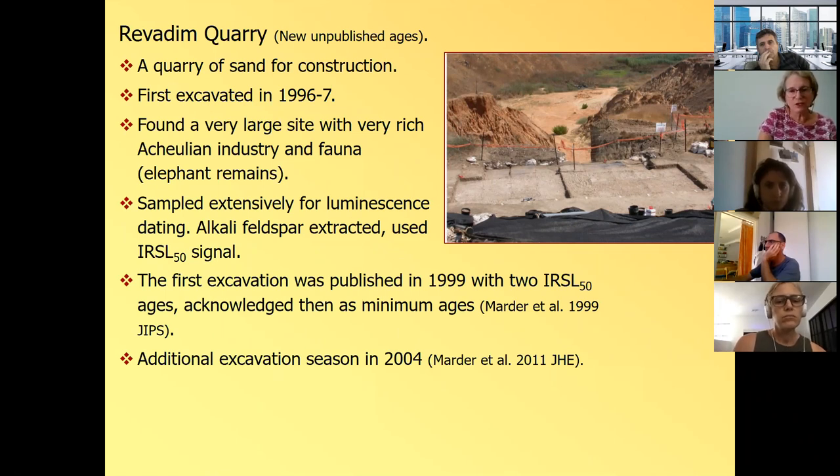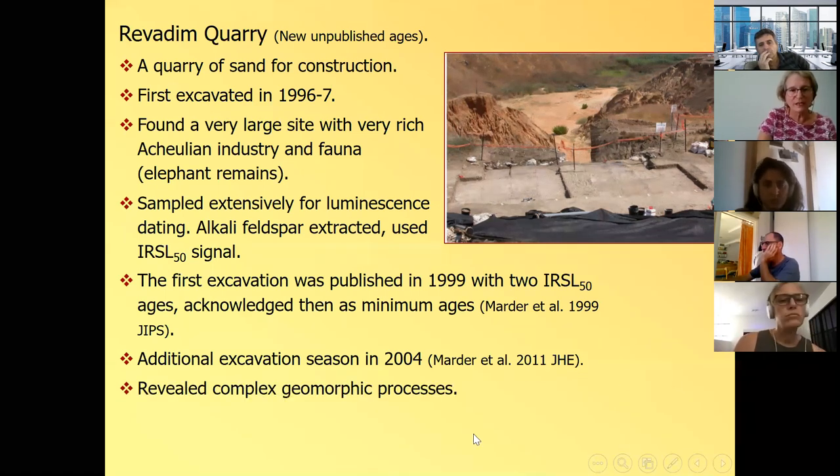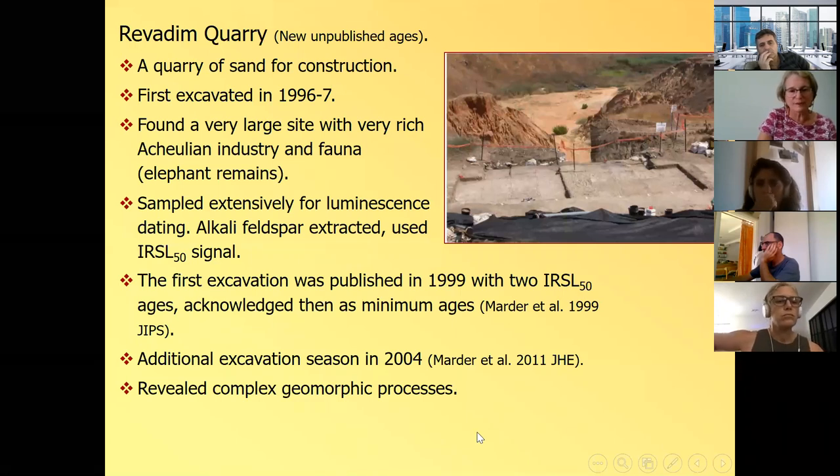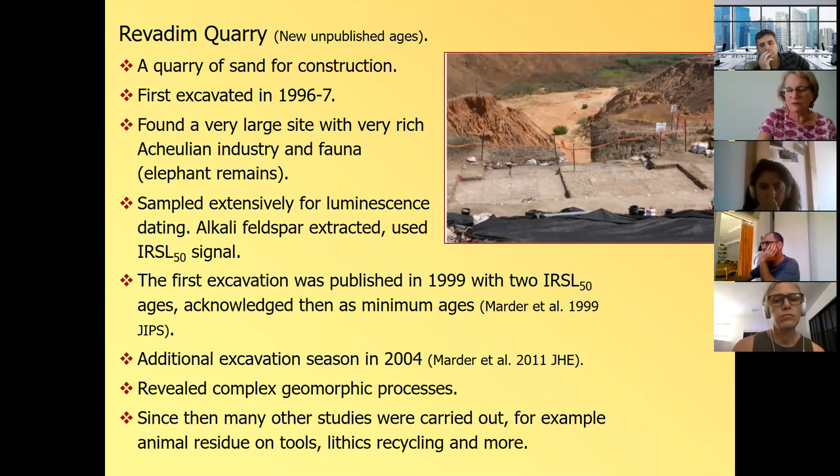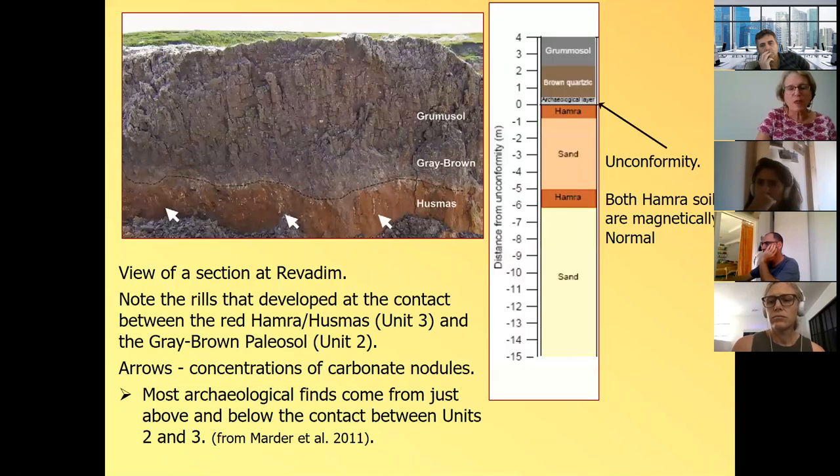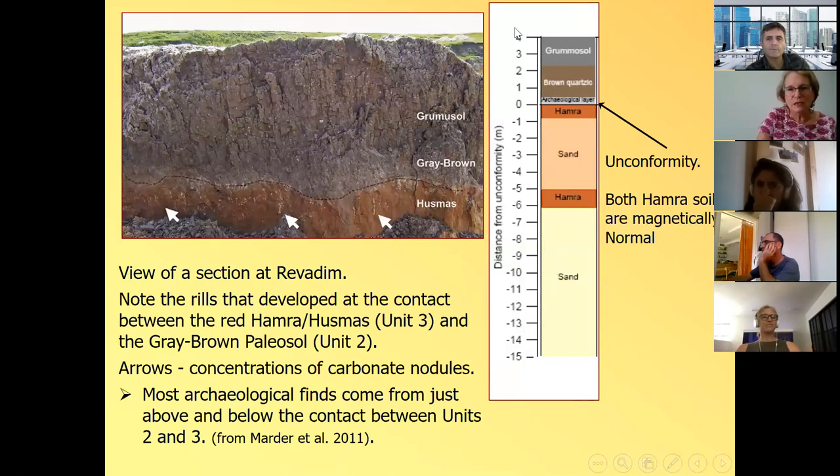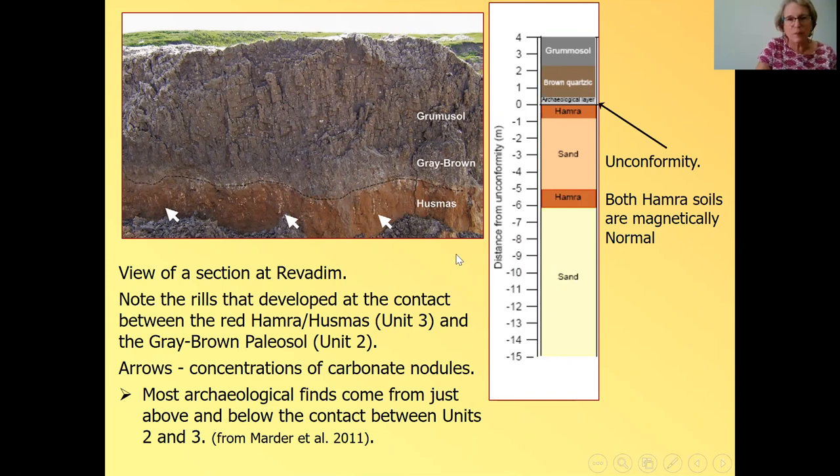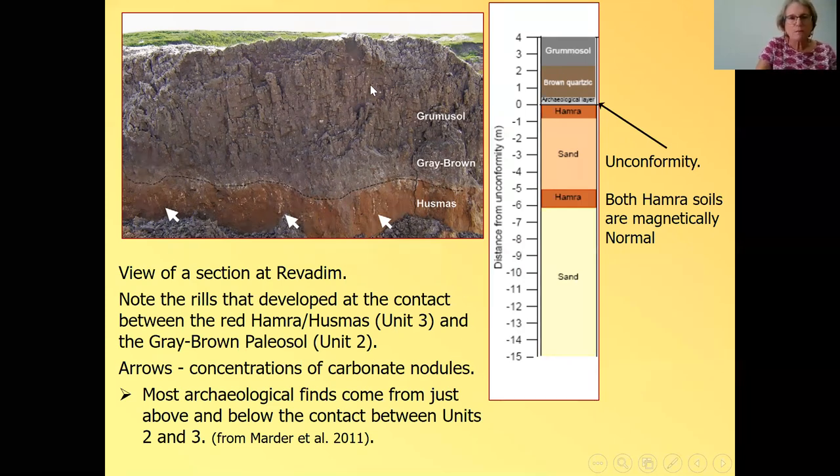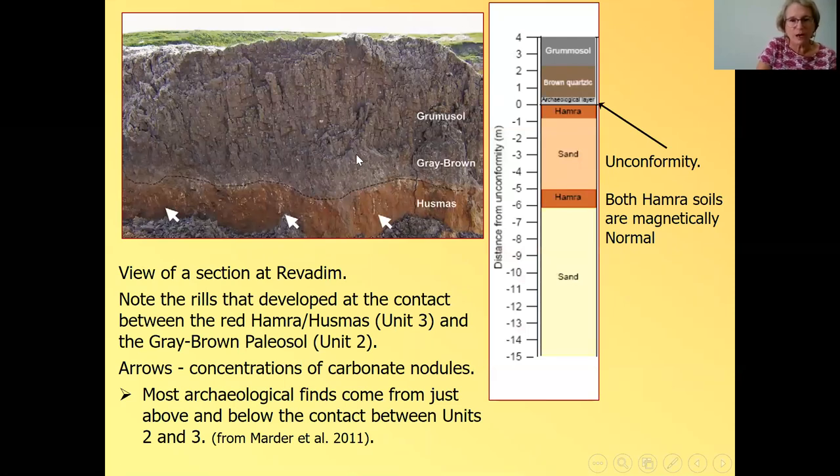And the first excavation was published by Marder et al. in 1999, with two IRSL 50 ages. And even at that time, we acknowledged that this could be minimum ages. You know, the rumors about fading were already circulating, and we knew that IR50 is not so reliable. And then there was additional excavation in 2004, which was published in 2011, which revealed very complex geomorphic processes. And since then, many other studies were carried out, for example, on animal residue on tools, on lithics recycling, and more. And if you put Revadim in any of your favorite academic site, you'll find the papers. So here's a photograph of the section, and here is a drawn section. And what you can see is the grumusol, a vertisol at the top, and then there's a gray brown soil, which we called here brown quartz soil. And here you can see very undulating contact between the hamra, which is a kind of hamra soil, rich in carbonates. You can see it here.